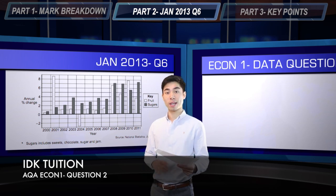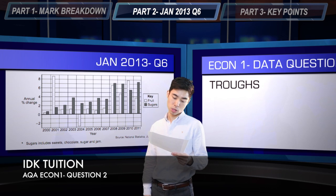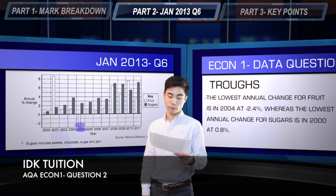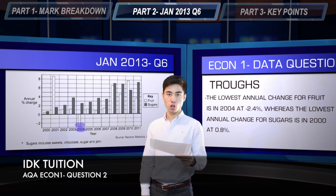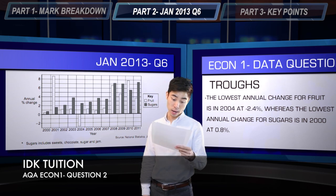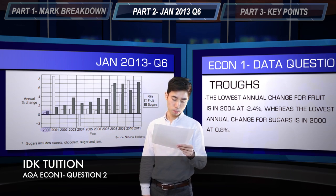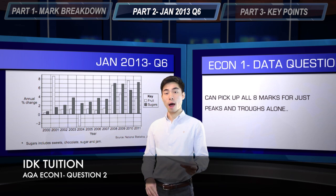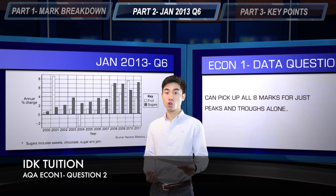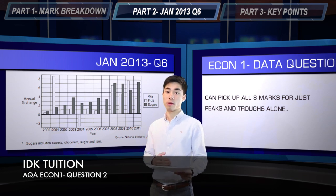You can also look at troughs — so the low points of each data series. For fruit, the lowest percentage annual change is in 2004 at about minus 2.8%, whereas for sugars it is in 2000 at about 0.8%. If you include two data points and two dates for peaks, and two data points and two supporting dates for troughs, you could pick up all eight marks — those are two separate points of comparison.